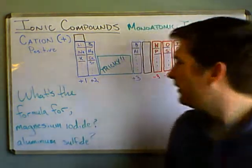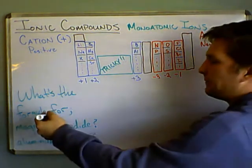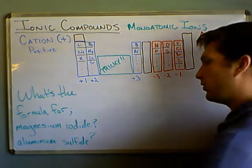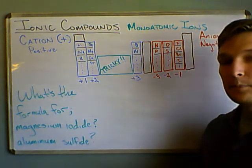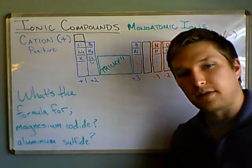So what about something more complicated like magnesium iodide or aluminum sulfide? Well, how do we write the formula for that?